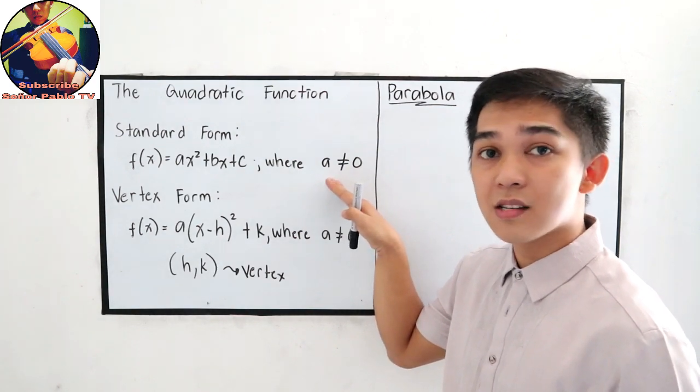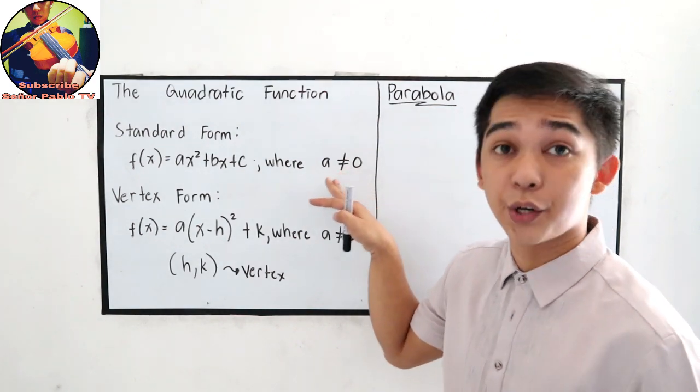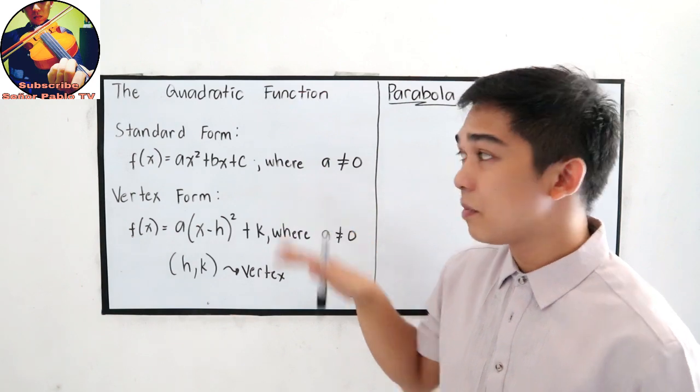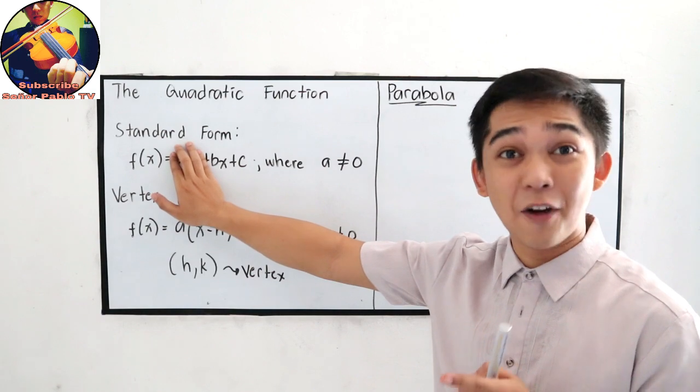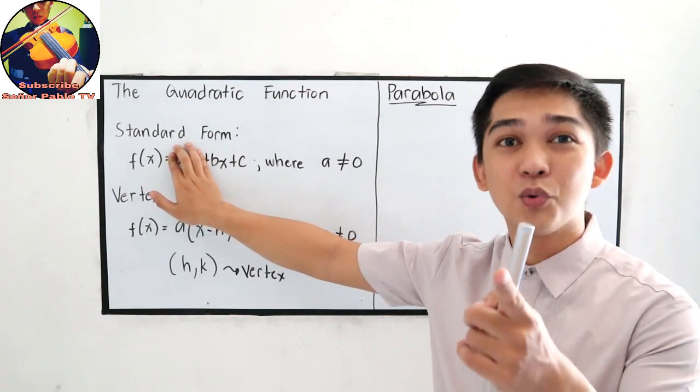So our condition is a must not be equal to 0. Why? Because if a is 0, then it will not be a quadratic function anymore. It will give you a linear function.